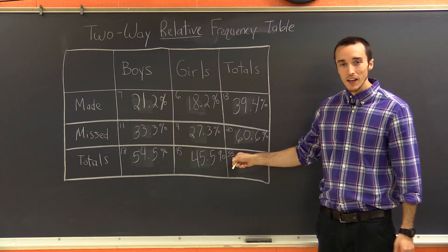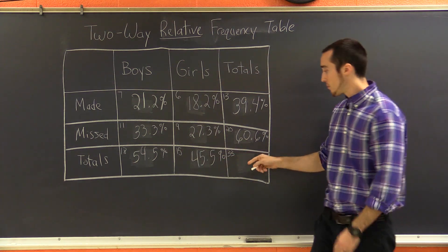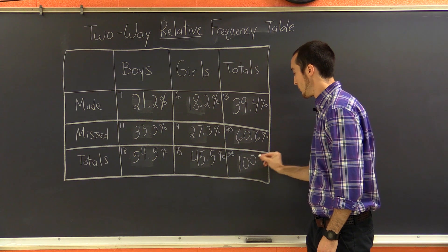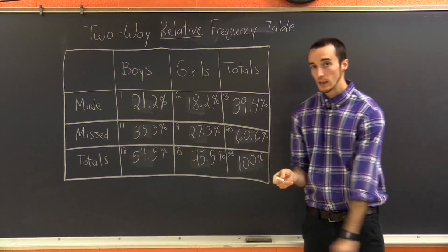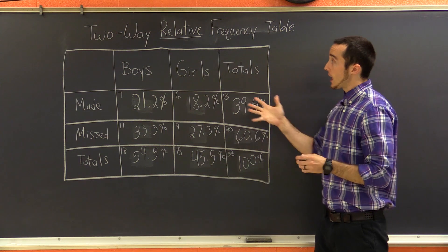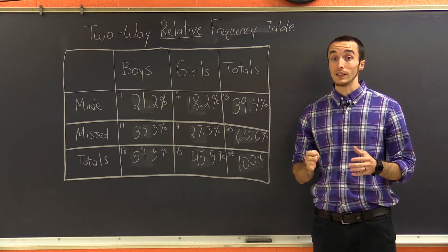Now, common sense, this last place has to obviously be 100% to represent all of the students in the class. So that is how we make a two-way relative frequency table.